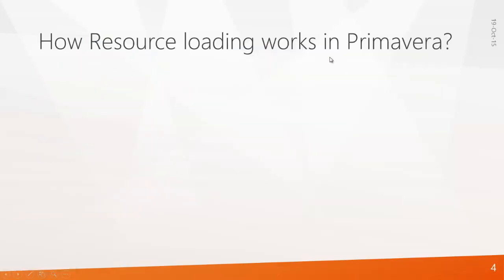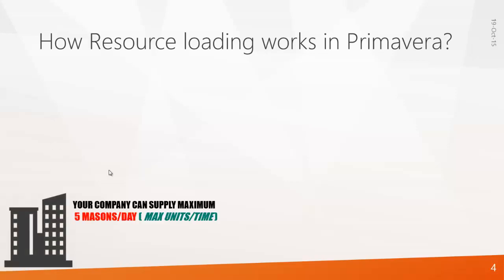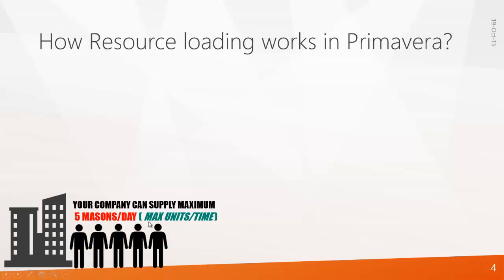Now let's see how resource loading works in Primavera. In real time, the case is entirely different from how Primavera loads resources. Let's say in your company you can supply a maximum of 5 masons per day — in Primavera, we call this maximum units per time. And each mason charges $50 per day — in Primavera, we call this price per unit.